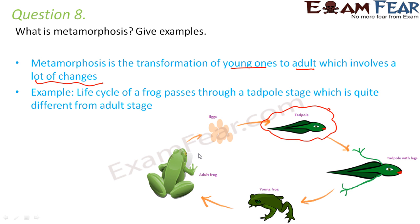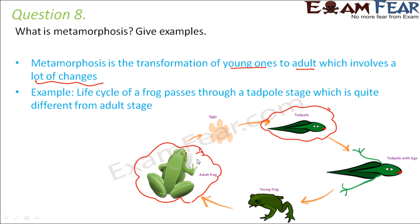One such example is the life cycle of a frog. In its initial stages it is a tadpole, which looks very different, but when it grows up it becomes a frog. These drastic changes which lead to the transformation of a tadpole into a frog are called metamorphosis. A similar concept is seen in the case of silkworm as well.